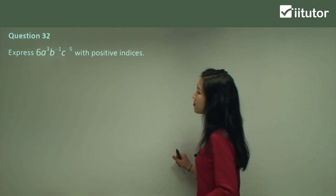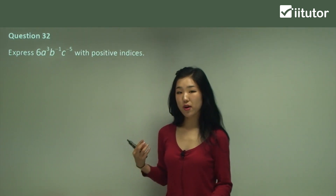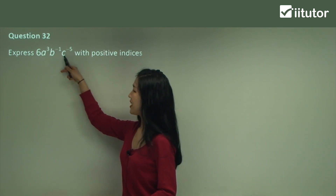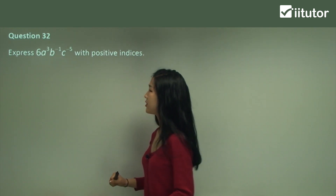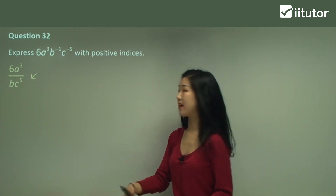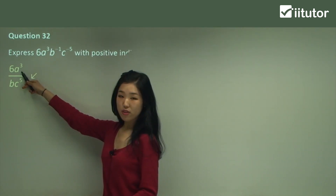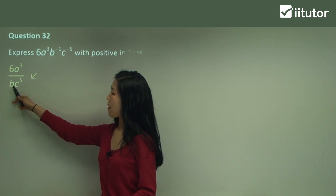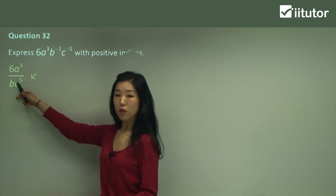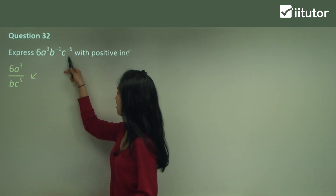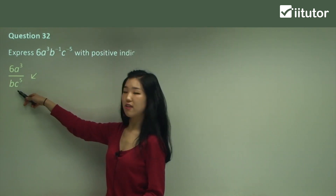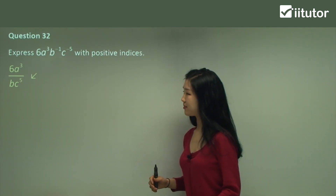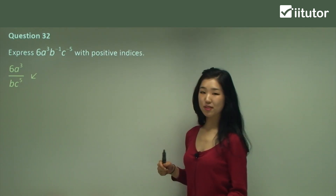Question 32. Check which ones have the negative index. B and C have negative indices, so simply move those down to the denominator. 6a cubed remains on the numerator, and b to the power of negative 1 becomes b to the power of positive 1, which is just b. And c to the power of negative 5 — we change the sign so it becomes c to the power of positive 5. That's all you have to do.